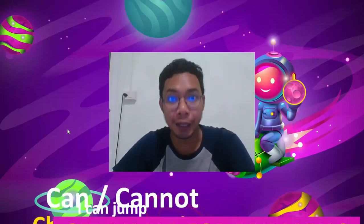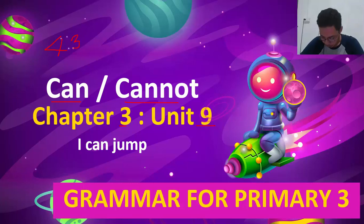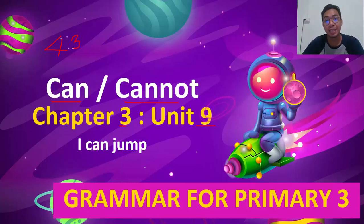Hello my students and welcome to my class, English with Tisha Ju. Today we are going to study can and cannot, chapter 3, unit 9: I can jump. What you need while watching this video: first, your English book turned to page 43; second, a pen or pencil to write things down; and also an eraser or correction liquid so you can erase mistakes and keep your book clean.